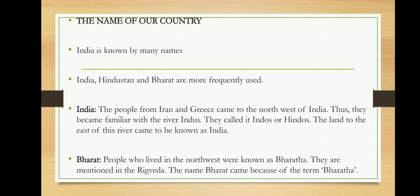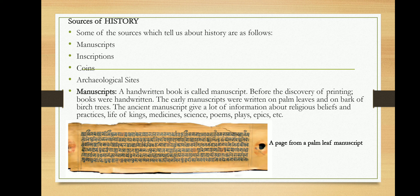Now for the most interesting part: how did India get its name — India, Bharat, or Hindustan? People from Iran and Greece came to the northwest of India and were familiar with the river Indus. They started calling the people living on the other side 'Hindus,' and the land where the river flowed came to be known as India. People who lived in the northwest were known as Bharata, as mentioned in the Rig Veda, and the name Bharat came from the term Bharata.